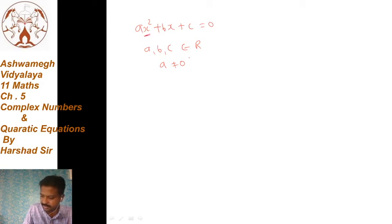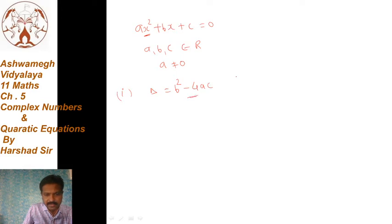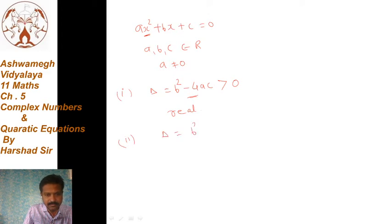For the discriminant, delta = b² - 4ac के लिए, दो संभावनाएं हैं। यदि delta positive मिलता है, तो solution of quadratic equation भी real होता है। और यदि delta = b² - 4ac less than 0, so the roots and the solution of the given quadratic equation are imaginary and non-real.